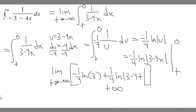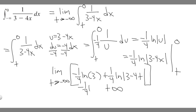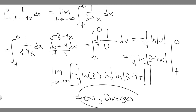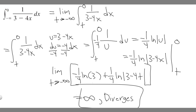So we have plus infinity. And this other part is just a constant — minus one over four times ln of three. If you take a constant and add it to infinity, it's still going to be infinity. So this limit is equal to infinity. Since it approaches infinity, it means the integral diverges. When you solve this, if it approaches infinity or negative infinity, it diverges. If it approaches an actual finite number — like 2 or 27 — it converges. But in this case it goes to infinity, so it diverges. Hopefully you found this useful.